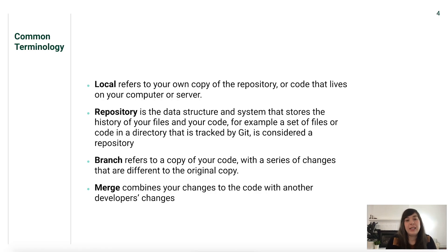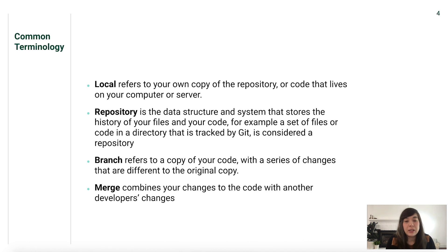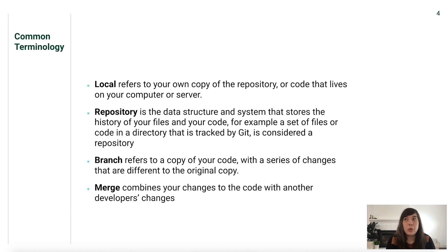Some common terminology that's really important to understand before we move forward: a repository is the data structure and system that stores the history of your files and your code — it's a set of files or code in a directory that's tracked by Git. Local refers to your own copy of that repository, the code that actually lives on your computer. A branch refers to a copy of your code with a series of changes that are different to the original copy. And a merge is essentially what it means to combine your changes to the code with another developer's changes or the original version itself.